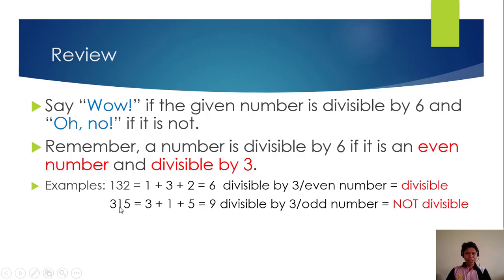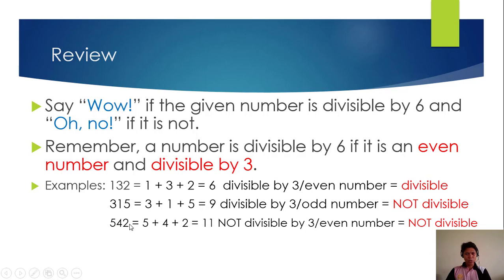Another example, we have 315. 3 plus 1 plus 5 is equal to 9, divisible by 3, but it is an odd number, so it is not divisible by 6. Oh no. So by just looking at that, if it is an odd number already, you don't need to add the digits. It is automatically not divisible by 6. Another example, we have 542. It is an even number, so we'll continue. 5 plus 4 plus 2 is 11. However, 11 is not divisible by 3, therefore it is not divisible by 6. Oh no.